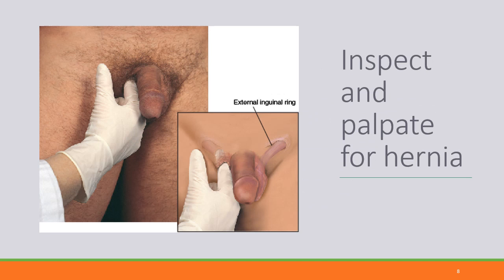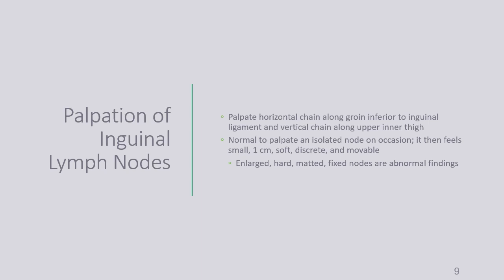You can also palpate the femoral area for a bulge. This assesses whether any colon or GI tract has herniated through a weakening in the abdominal muscle wall and out through the inguinal ring.